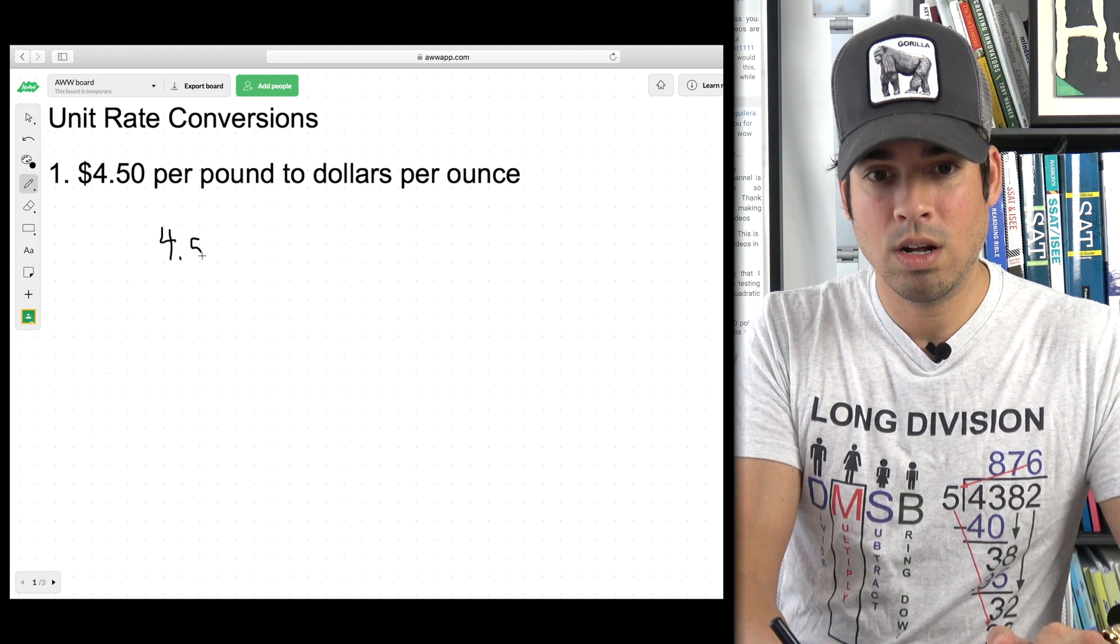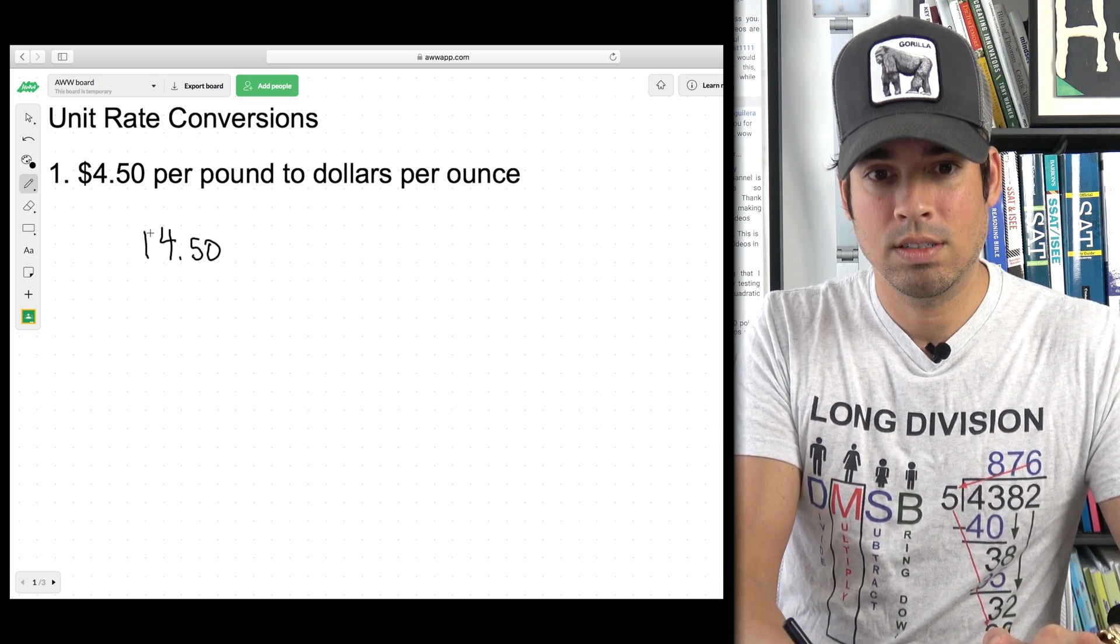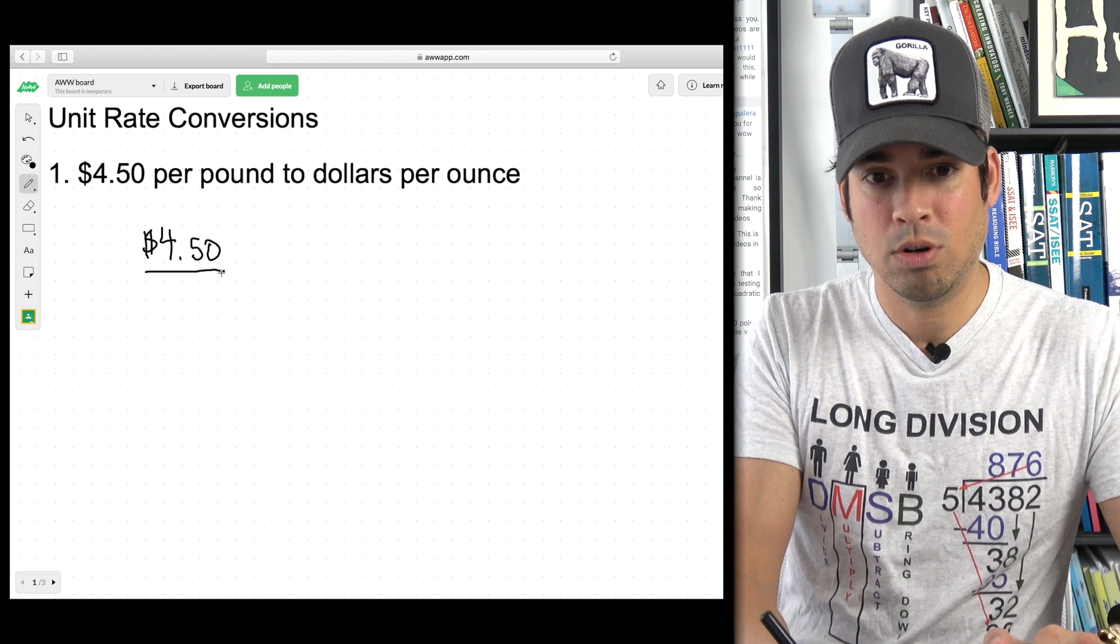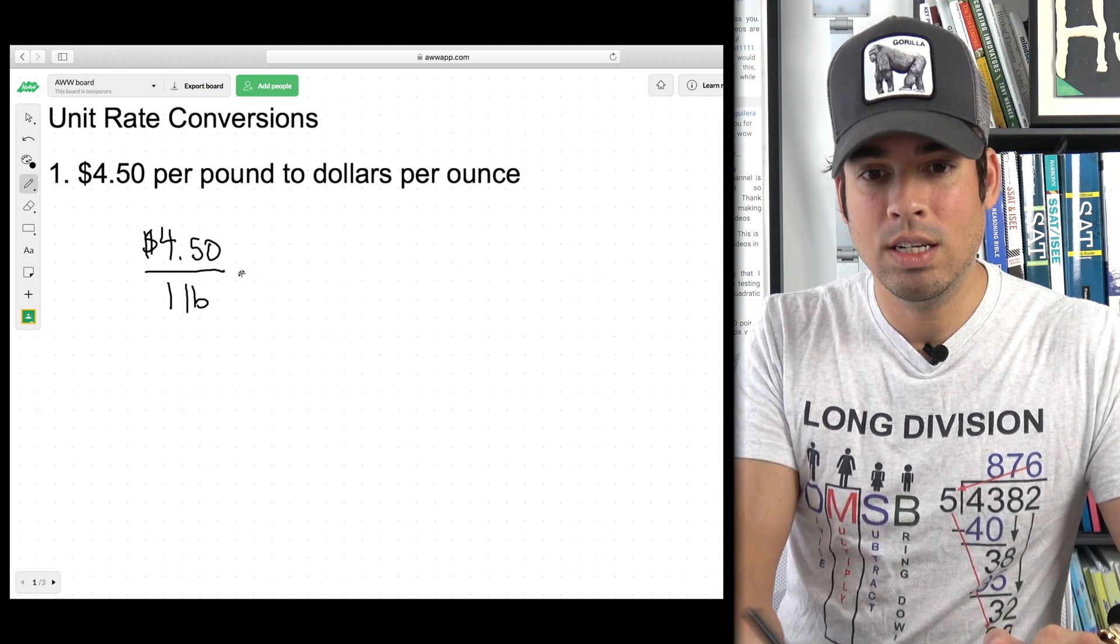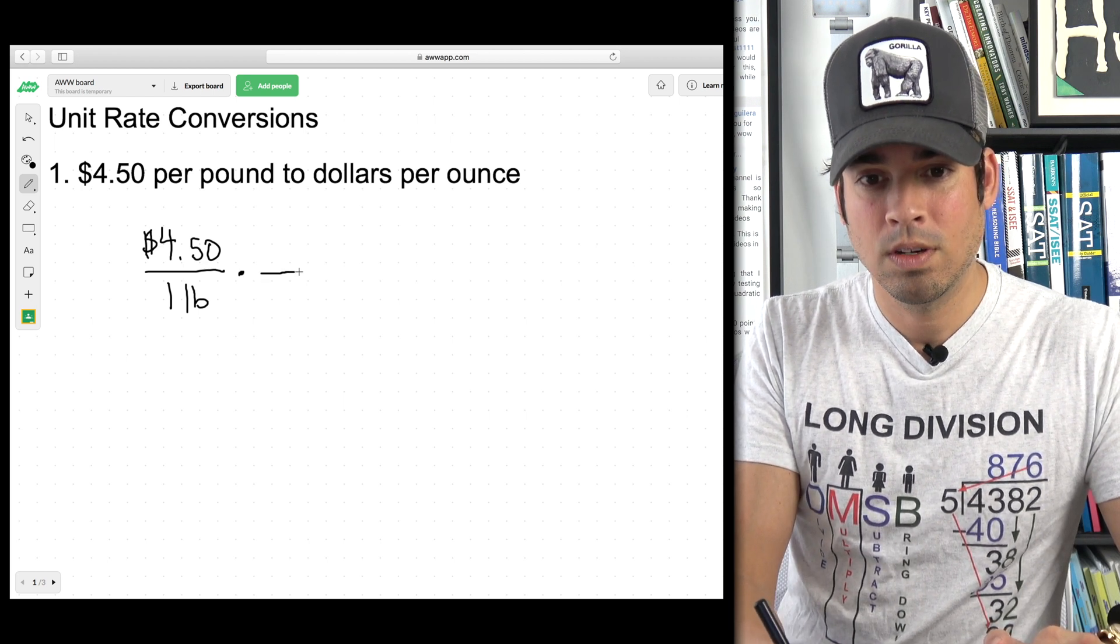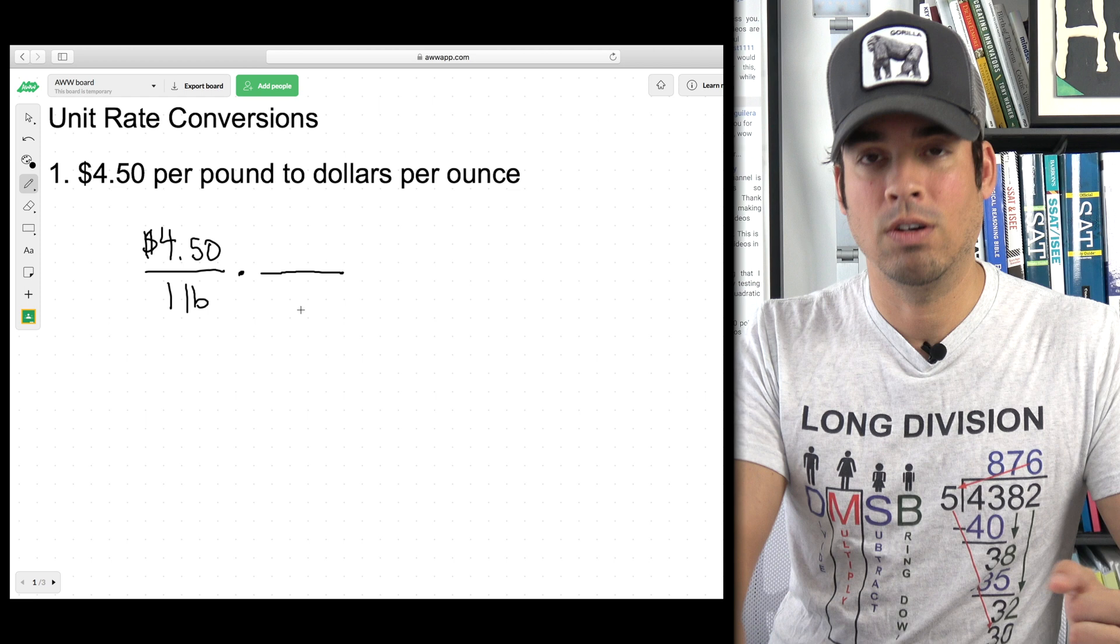First of all I want to write this out as $4.50, so we're going to keep that in dollars per one pound. That's the abbreviation for pound right, LB. Now we need a ratio, a conversion ratio.